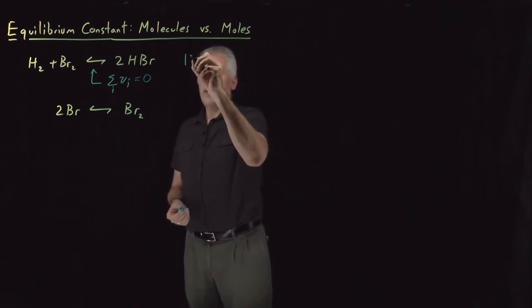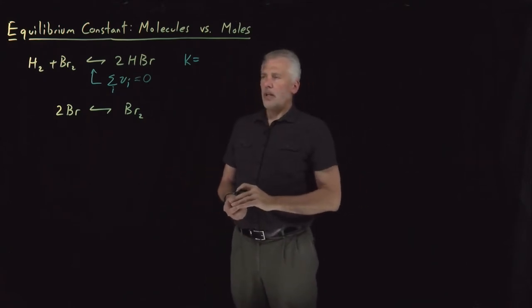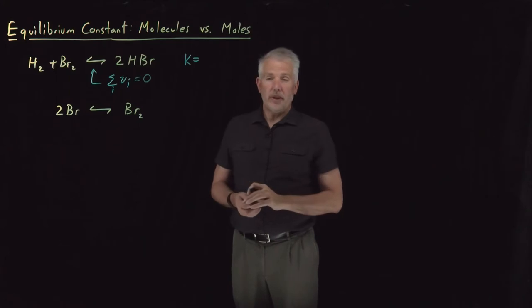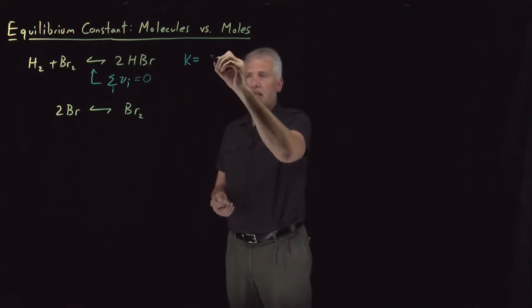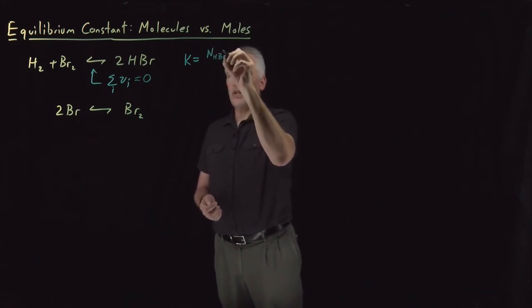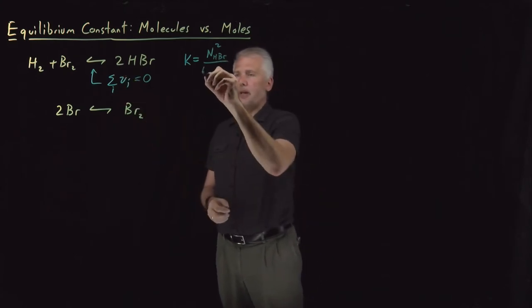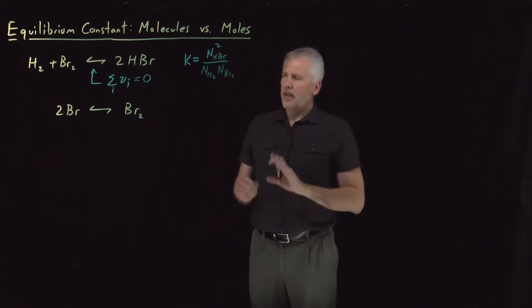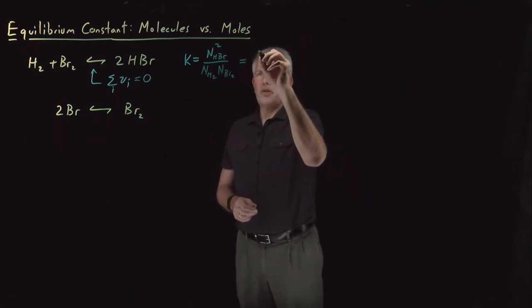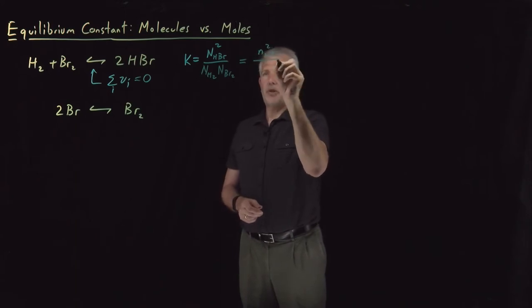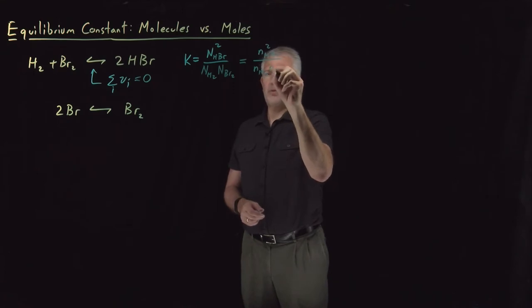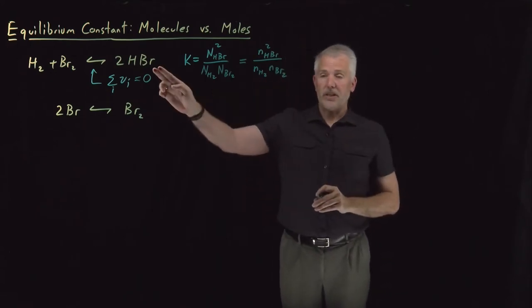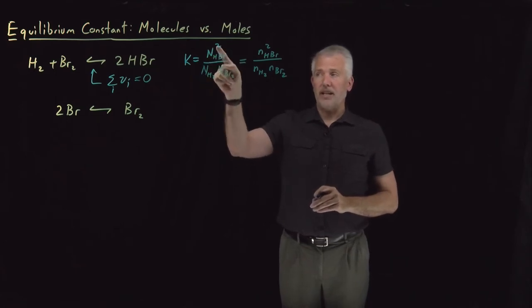When we write down an equilibrium constant — which we can calculate with partition functions — and set it equal to the number of molecules of product raised to their stoichiometric coefficients divided by the number of molecules of reactants raised to their coefficients, we've been fairly cavalier about whether we write that in terms of molecules or moles. For the top reaction (HBr), molecules of HBr squared over molecules of H₂ and Br₂ equals moles of HBr squared over moles of H₂ and Br₂, because the number of N's in the numerator and denominator are the same.